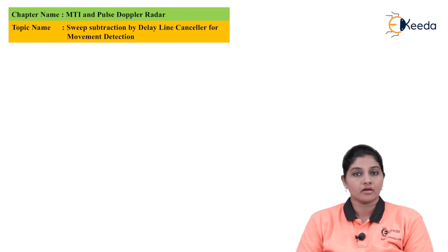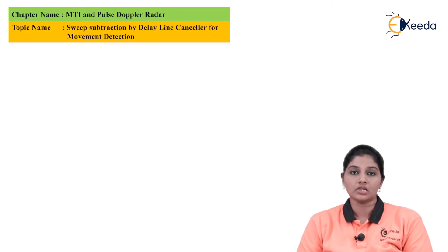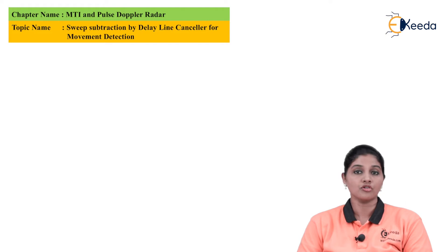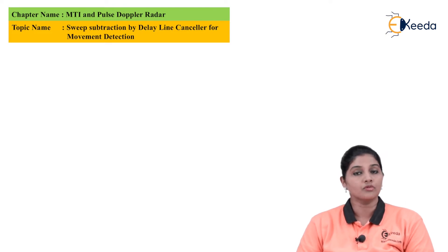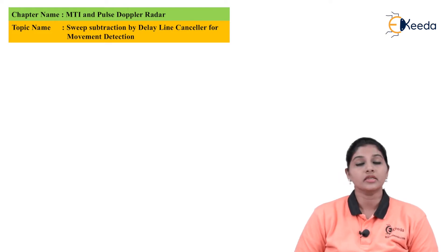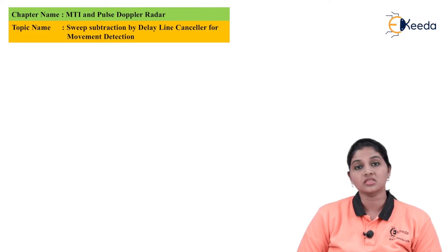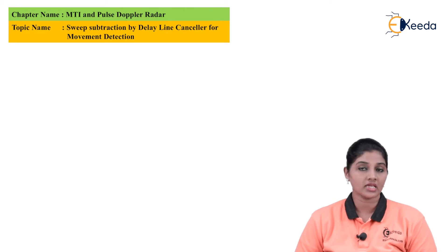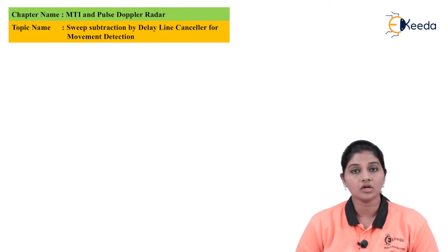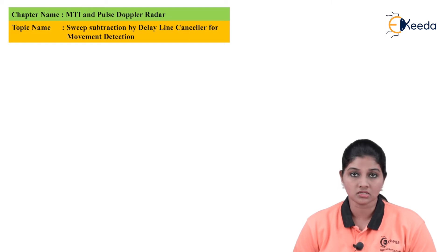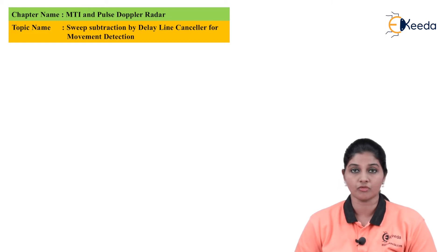In case of MTI radar, the receiver consists of a delay line canceller which plays an important role. The object can be detected properly by using the moving target indication radar. In case of MTI radar, the single delay line canceller is not enough to remove the clutter present in the MTI radar output.